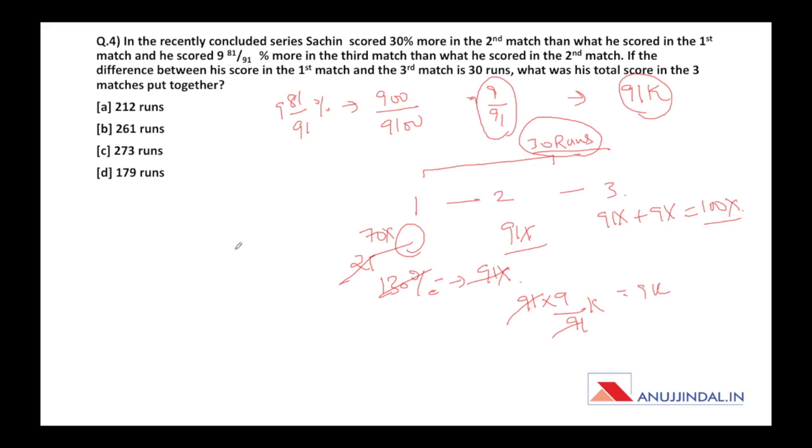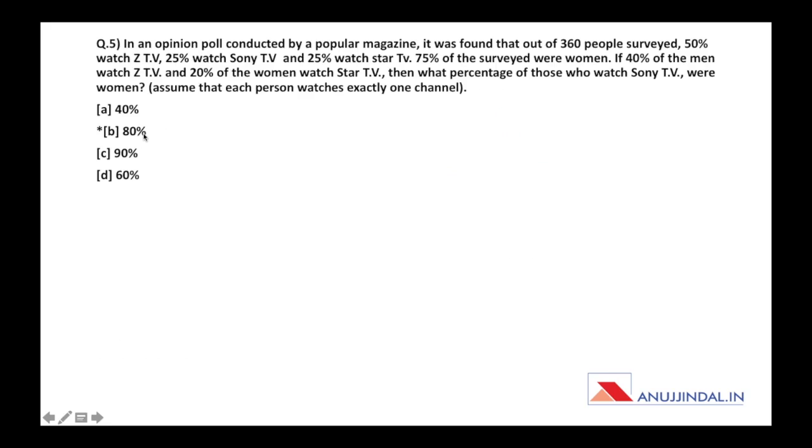Now we have first, second, third all three numbers: 70x, 91x, 100x. The difference between first and third is 30 runs. So 70x and 100x difference is 30x, meaning 30x equals 30 runs. Therefore x equals 1. So our score is 70, 91, and 100. Add these three and the answer is 261. This would be our answer.